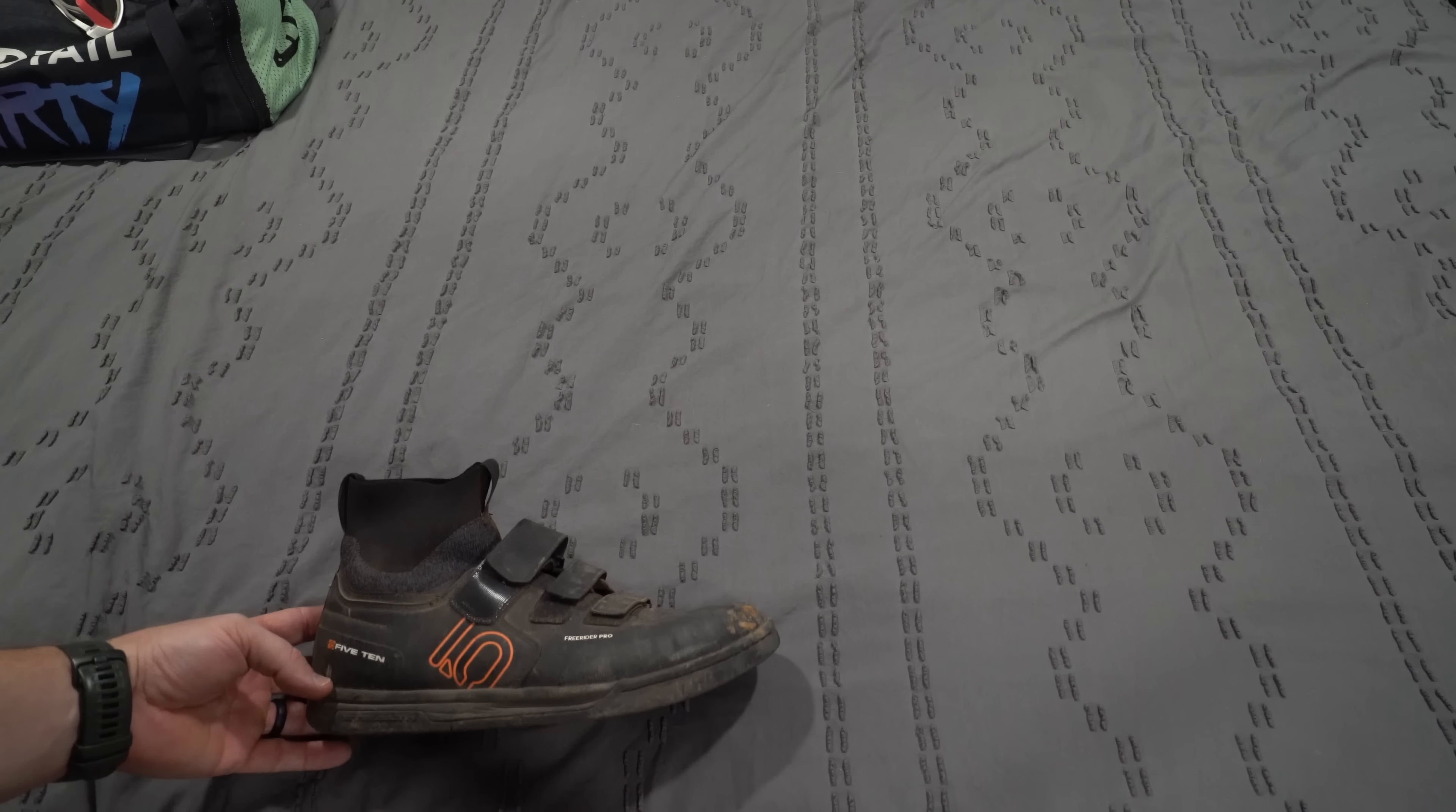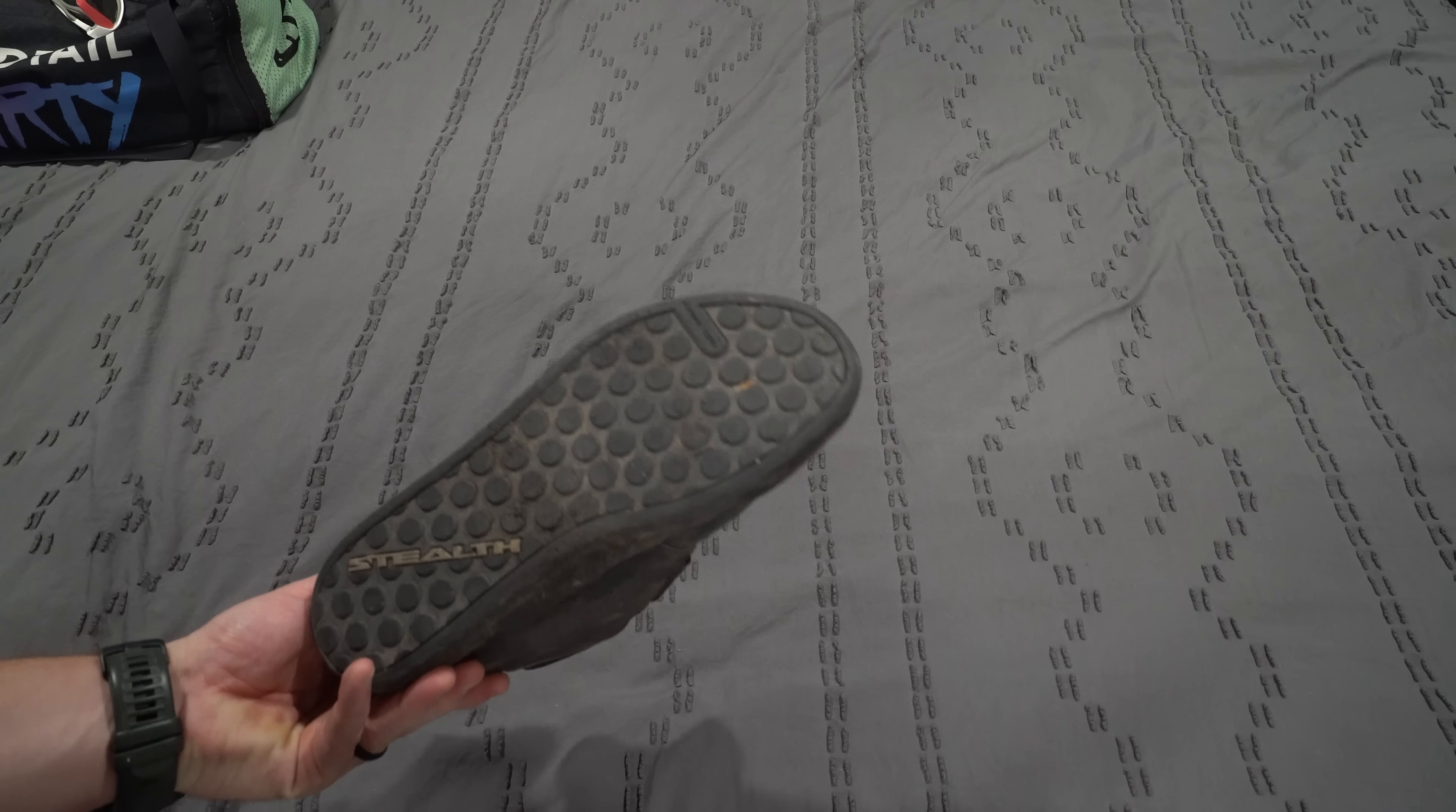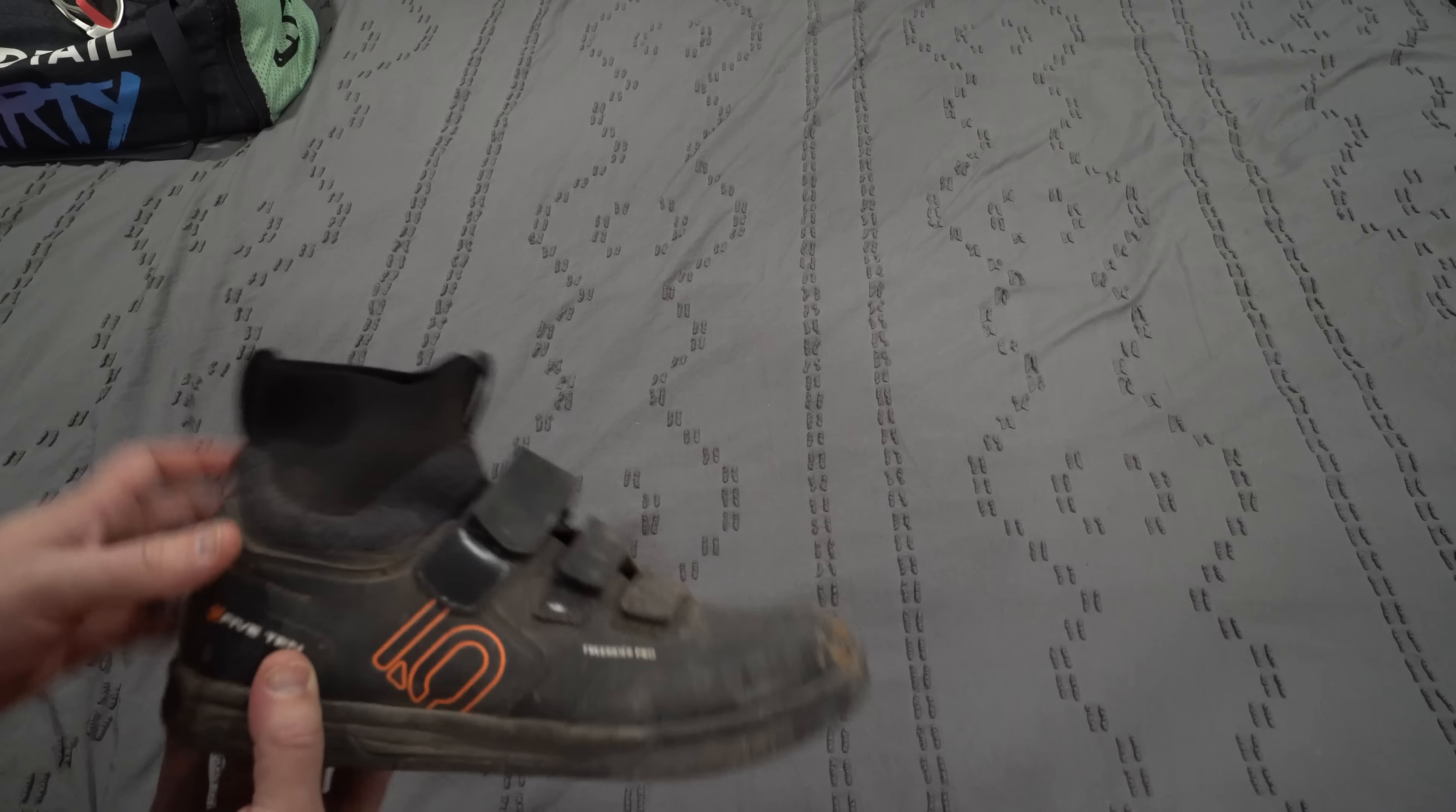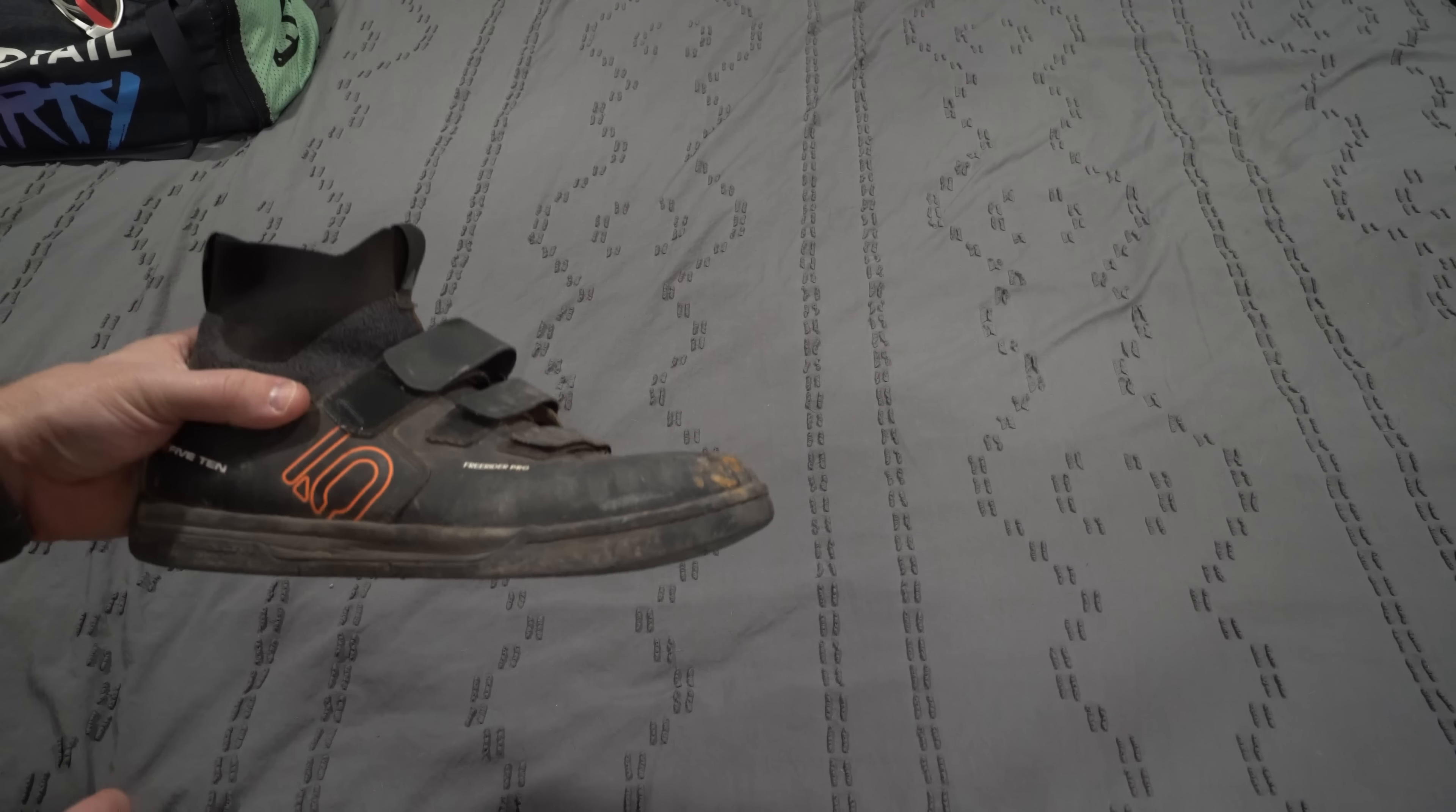At the Sedona Mountain Bike Festival, the guys at 510 showed me these shoes. And I thought they were the ugliest shoes I'd ever seen. And they still might be. But these have become my favorite flat pedal shoes. These are the 510 Freerider Pro. I don't get rocks in them. I don't get dirt in them because of this high cuff. They've got padded ankles. They're Velcro, which I actually like more than Boa. And they have that legendary stealth rubber.